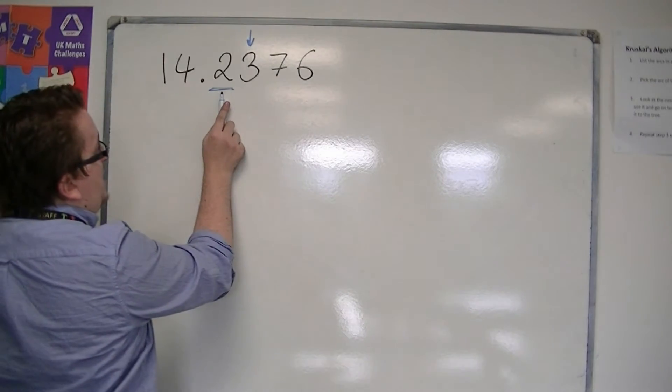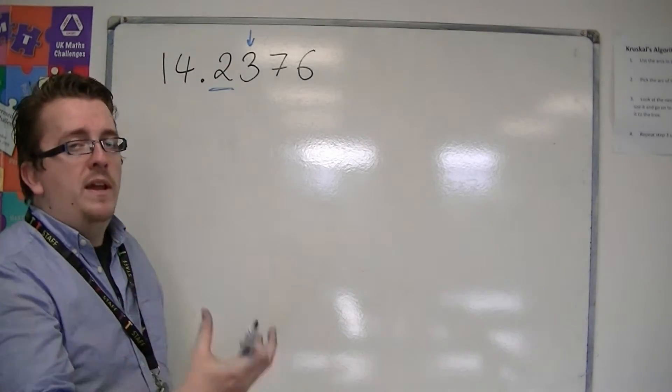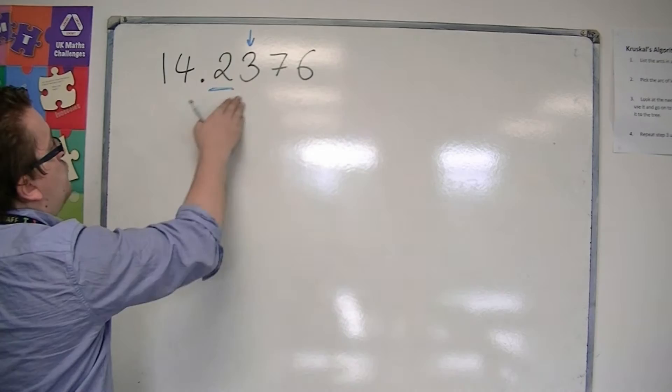So that is the first decimal place. We look one to the right. And if it is five or more, I round up. If it is less than five, I round down. And in this case, I would have to round it down.